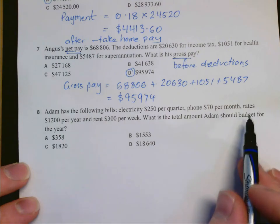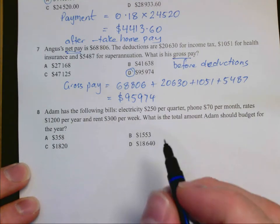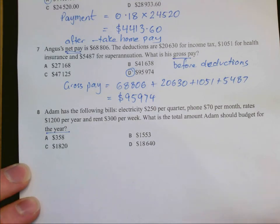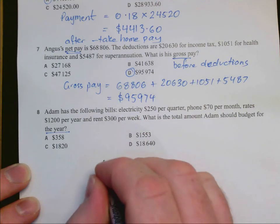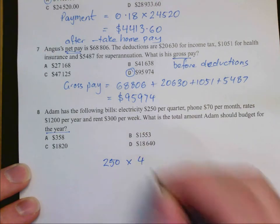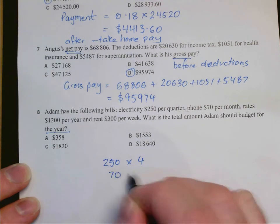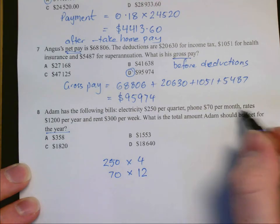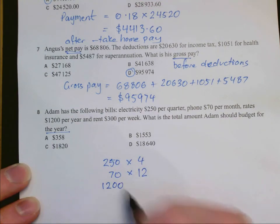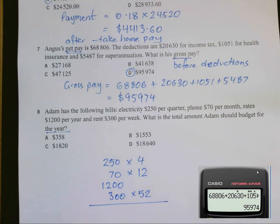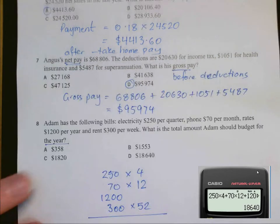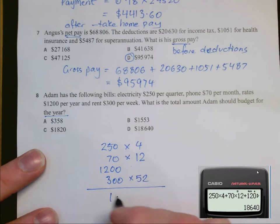Finally Adam has the following bills. His total amount for his budget. So we need to find for the year. So we need to convert all these amounts to a yearly amount. We have $250 per quarter. There are four quarters in a year so we need four of those. $70 for phone. We need 12 of those because it's per month. The rates are already per year $1,200 and the rent is $300 per week. So we need to add all that up. And we get a total amount of $18,640.